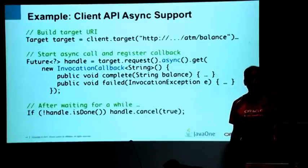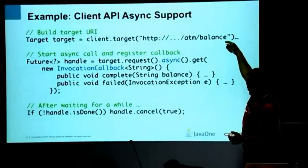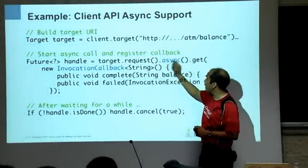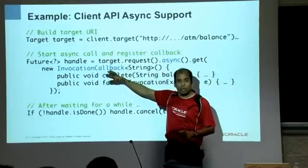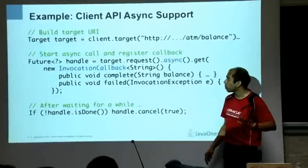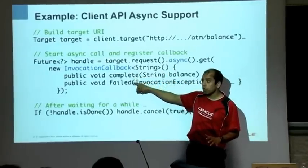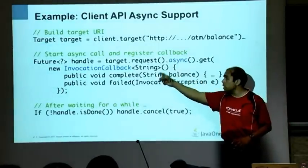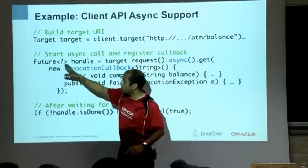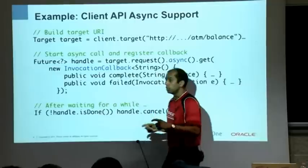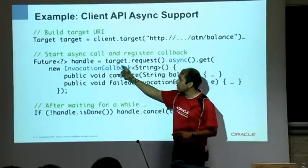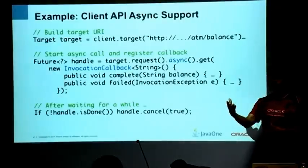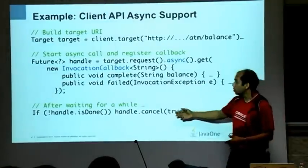On the client side, there's async API support as well. Using the client API, you say client.target(), on the target request, say async() before get(), and provide an InvocationCallback. The callback is invoked whether the request completes or fails. In completed() you handle the response; in failed() you handle errors. The return type is not String but a Future object — a standard JDK 1.6 concurrency API. On that Future you can check if the request is done, and if it's taking too long you can even cancel it.